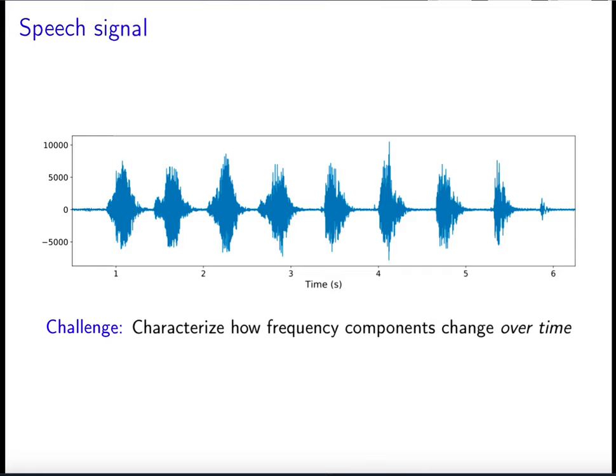So what do I mean by that? We have this speech signal — someone saying 'no, no, no, no, yes, yes, yes' in Hebrew. The point is that we want to characterize how frequency components change over time. Essentially, we would like to know what frequencies are more active at one part of the signal as opposed to another — what are the frequencies of the components we can find here versus here.